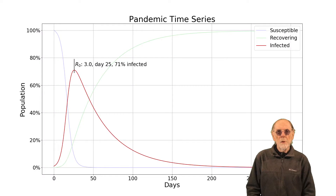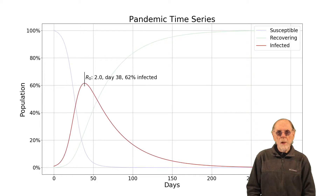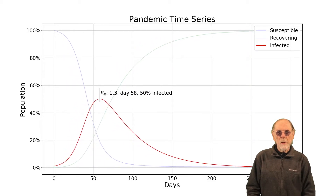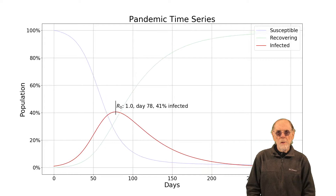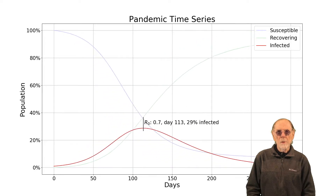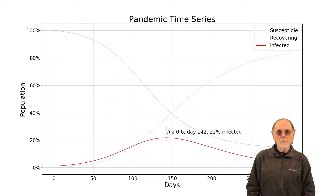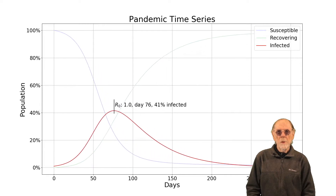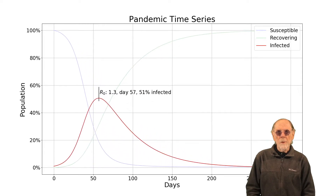The model shows a dynamic and interdependent relationship between individuals who are not infected, those who are infected and able to infect others, and those who are recovering. The key to the model is a number called R sub zero, which is the number of people an infected person will infect. Over time, in reality as well as in this model, people transition from susceptible to infected to recovering.